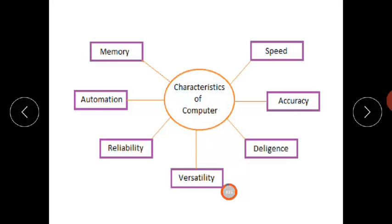Reliability: we call computer calculations reliable because the chance of errors is very low. If there is a problem in our programs, then there will be errors; otherwise, the computer is reliable. Automation means automating things — we give a task to perform and it performs that same task repeatedly without manual intervention.